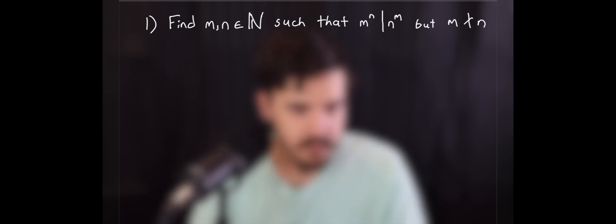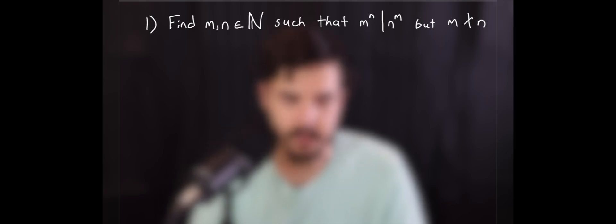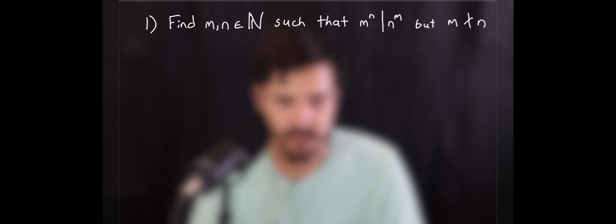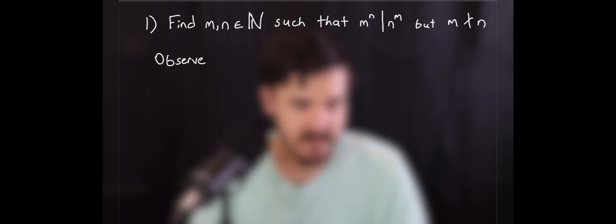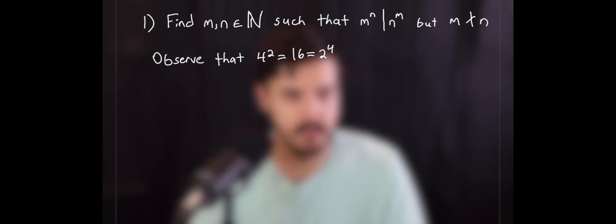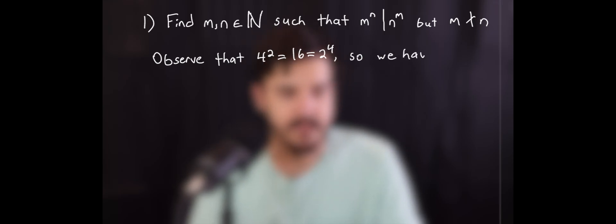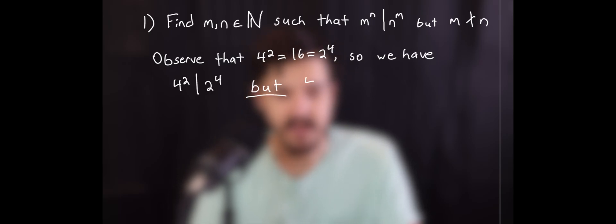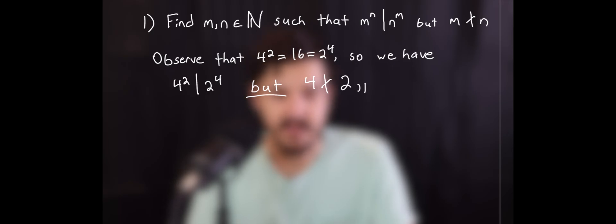This is a very simple example, just here to get us started on this topic. We can kind of do this from observation. We're going to observe that four squared equals 16, and 16 also equals two to the fourth. We can see that four squared divides two to the fourth, obviously, but four does not divide two. So that quickly takes care of that example and now we'll move on to something a little harder.